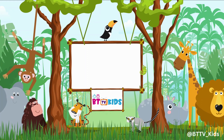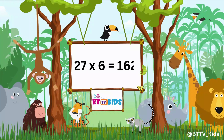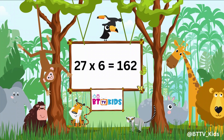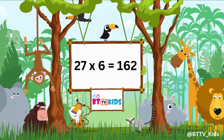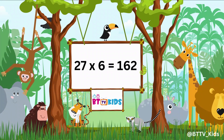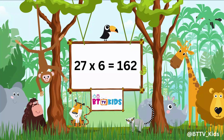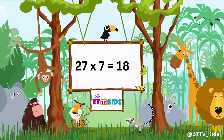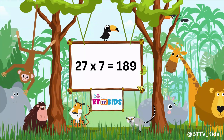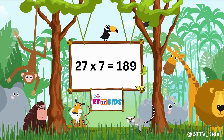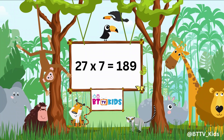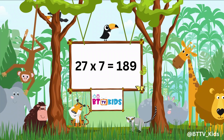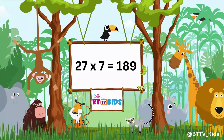27 sixes are 162. 27 sevens are 189. 27 sevens are 189.